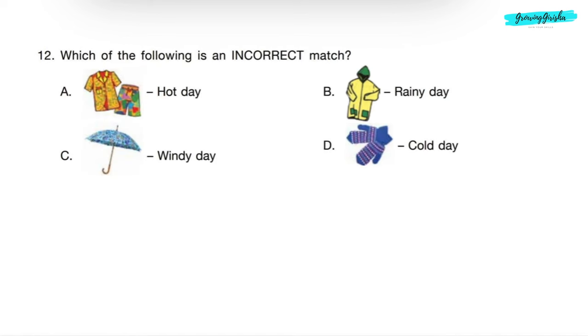Question 12: Which of the following is an incorrect match? Option A shows cotton clothes, which we wear in summers, that is hot day. So option A is a correct match. Option B shows raincoat, which we wear to protect ourselves from rain. So option B is also a correct match.